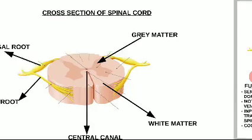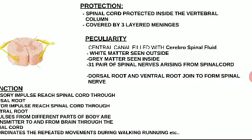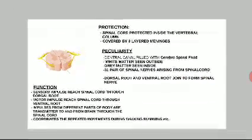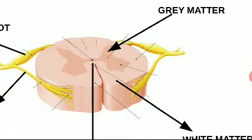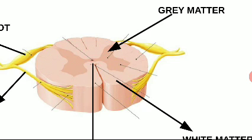Now let us look at the white matter. White matter is found on the outside here. Since the spinal cord is made of neurons, white matter refers to the area with myelinated neurons. Here the white matter is outside. When we studied the brain, it was the opposite — white matter was inside. Here, white matter is outside.